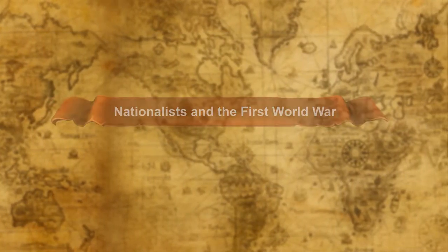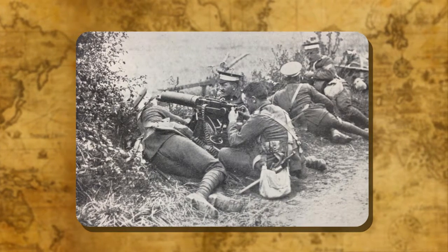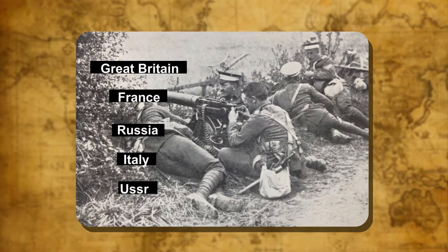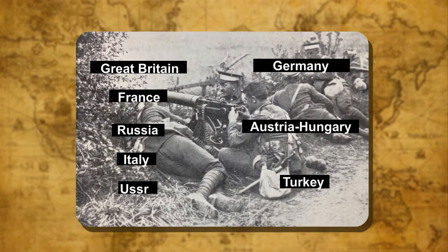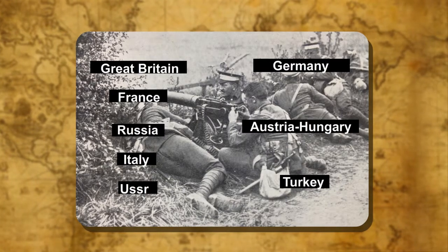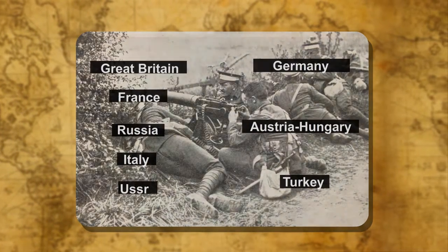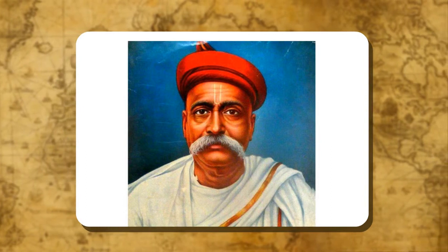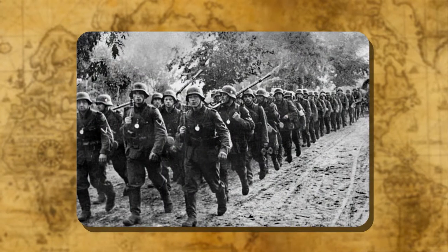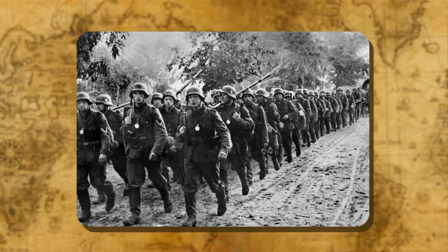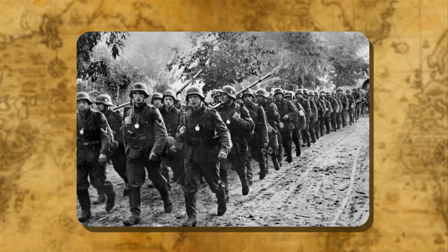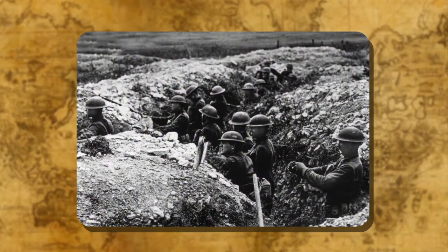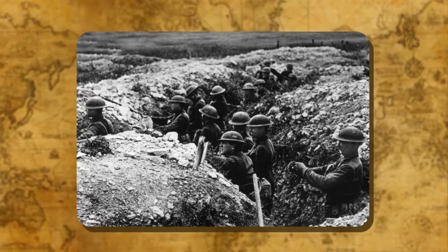Nationalists and the First World War. In June 1914, the First World War broke out between Great Britain, France, Russia, Italy and the USSR on one side, and Germany, Austria-Hungary and Turkey on the other. In India, the years of the war marked the maturing of nationalism. In the beginning, Indian nationalist leaders including Lokmanya Tilak, who had been released in June 1914, decided to support the war effort in the mistaken belief that Great Britain would repay India's loyalty and enable India to take a step forward on the road to self-government. They did not fully realise that the different powers were fighting the First World War precisely to safeguard their existing colonies.